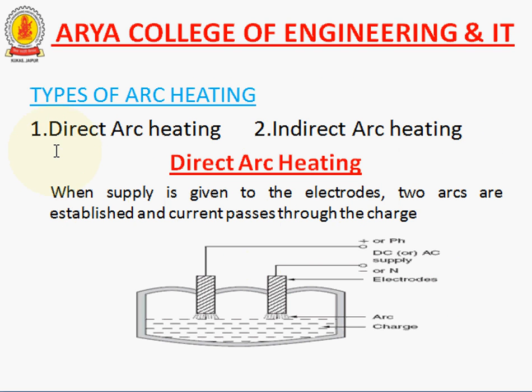Now we are going to the types of arc heating. There are two types: direct arc heating and indirect arc heating. Direct heating means the current flows in the element directly. Indirect heating means the current flows by the help of any highly resistive element through the wire or cable, and the heat is transferred by any one type of method such as conduction, convection, and radiation. These are the modes of heat transfer.